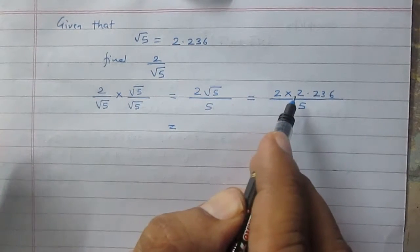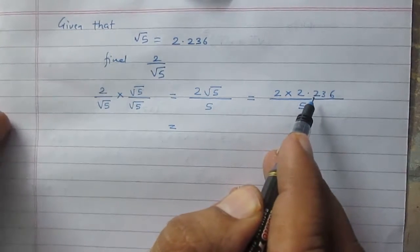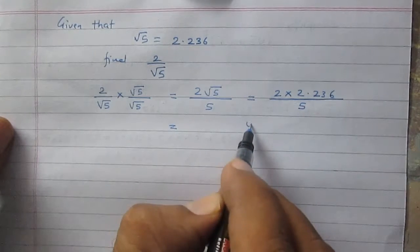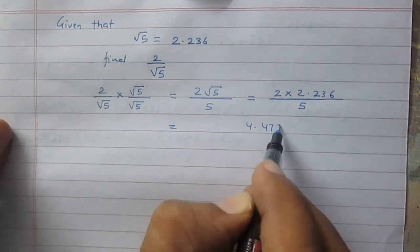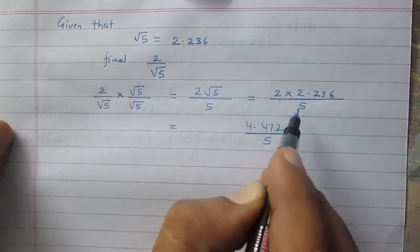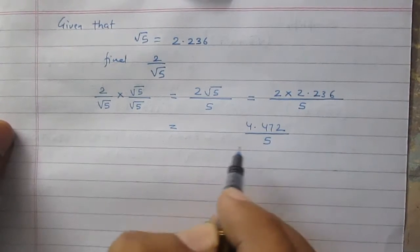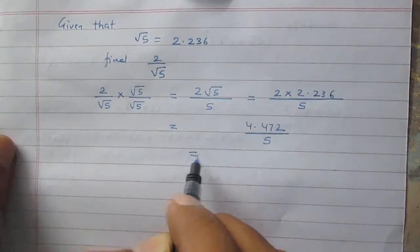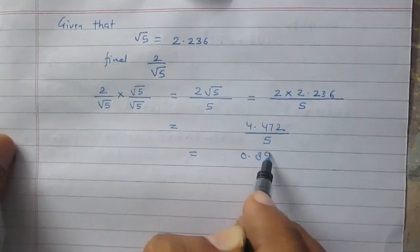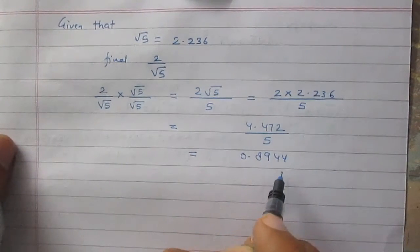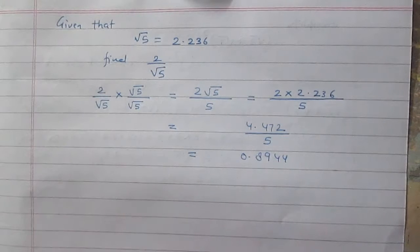The numerator, 2 multiplication with 2.236, is 4.472, and then it is divided by 5. So the final result we will get 0.8944 approximately.